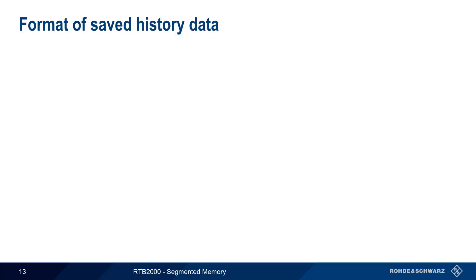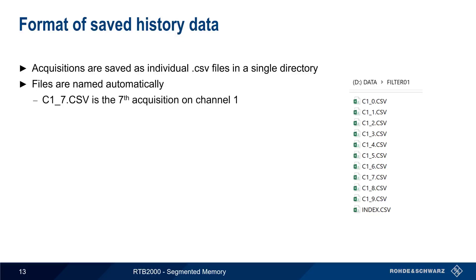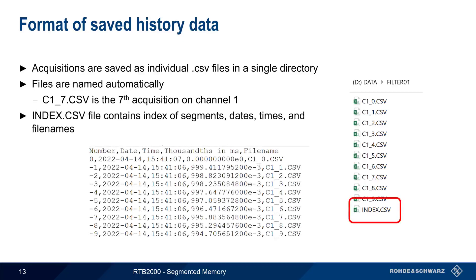Part of the reason why saving history can take some time is that the waveform points for each acquisition are stored as individual CSV files, all of them in a single directory. Segment files are named automatically — for example, c1-7.csv is the seventh acquisition or segment for Channel 1. The segment table is stored as a file named index.csv in the same directory as the waveforms, and this file points to the acquisition data for each entry in the table.